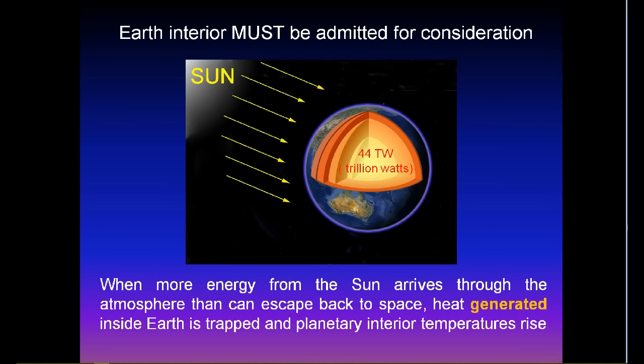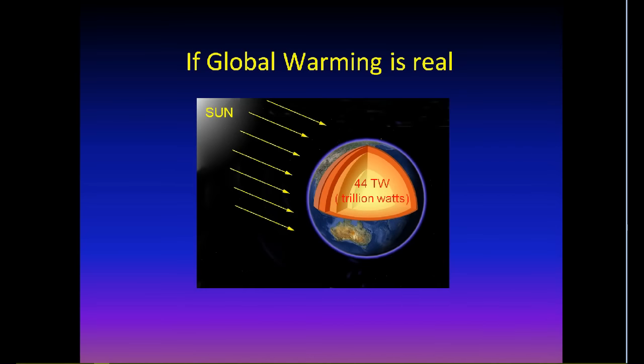When more energy from the Sun arrives through the atmosphere than can escape back to space, the heat generated inside Earth is trapped and the planetary interior temperatures rise. If global warming is real, warming of Earth interior is real too.